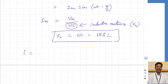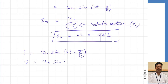So writing the current again: I equals I-maximum sine of omega-t minus 90 degrees, and the voltage is V-maximum sine omega-t as the reference. We can draw the phasors — the voltage phasor V is the reference at angle 0. The current vector is lagging behind the voltage vector by an angle of 90 degrees. Whenever anything is lagging, we represent it in the clockwise direction, and leading is represented in the counterclockwise direction.